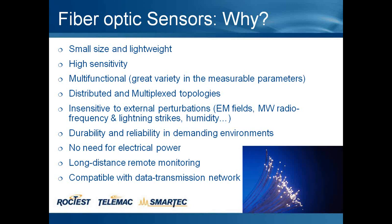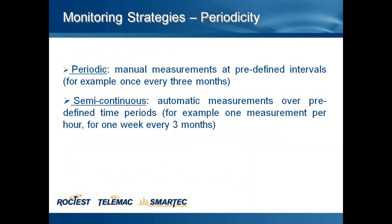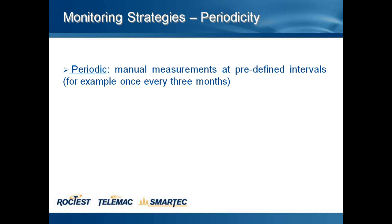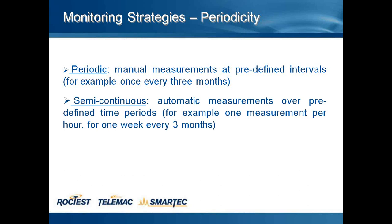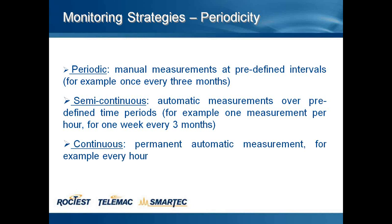Regarding the monitoring strategy and periodicity: we can have periodic measurement — manual measurement at pre-defined intervals, for example once every three months. Semi-continuous automatic measurements over pre-defined time periods, for example one measurement per hour for one week every three months. Or continuous permanent automatic measurement, for example every hour.